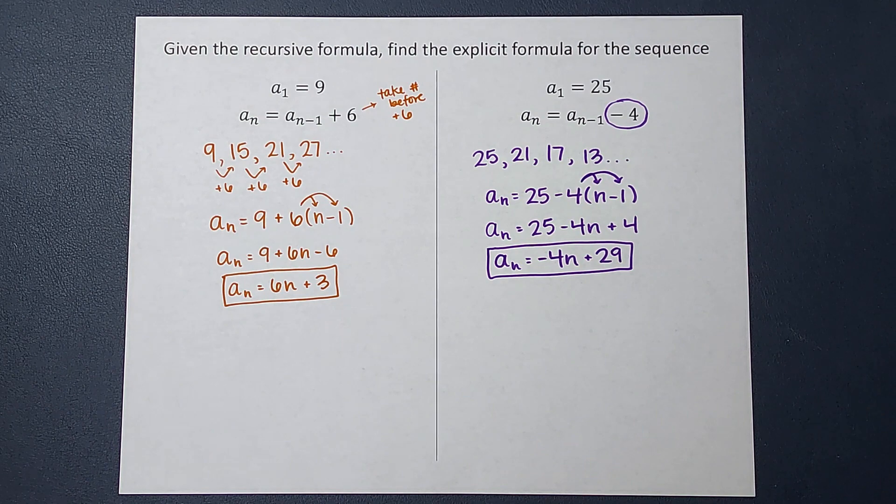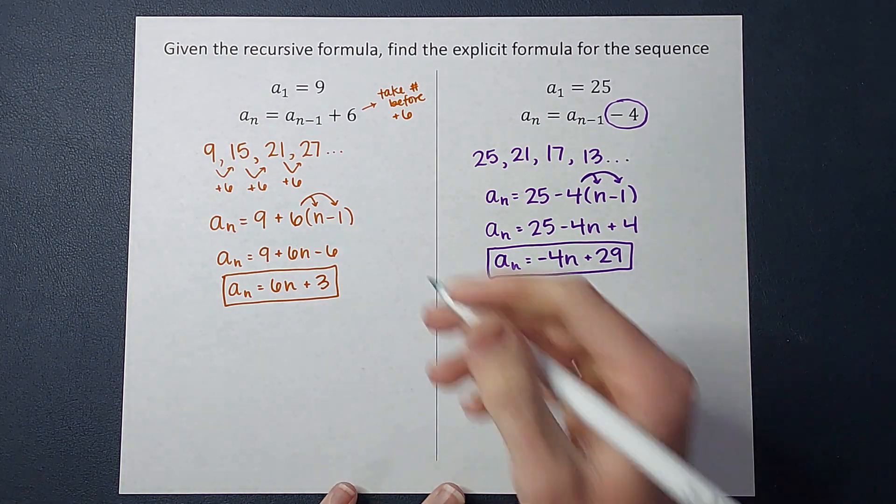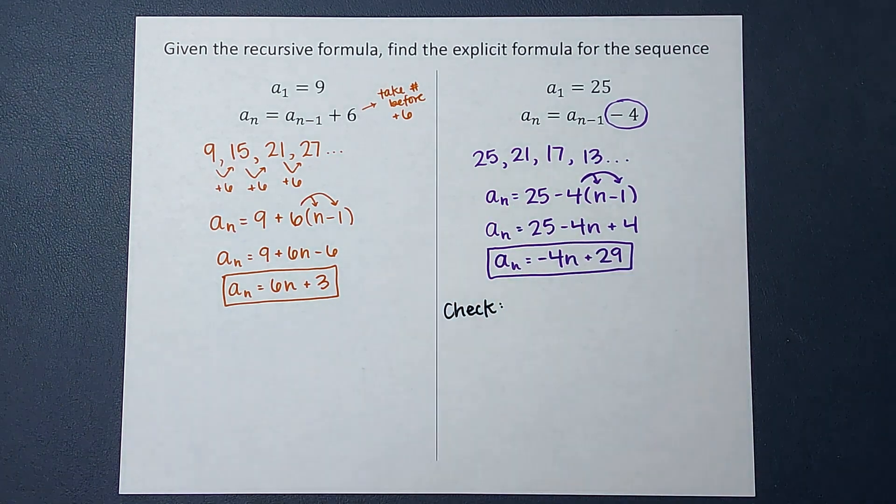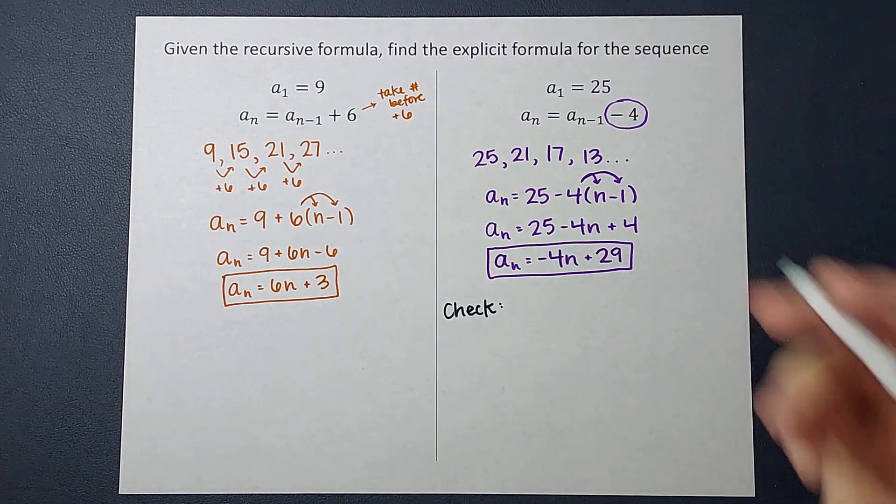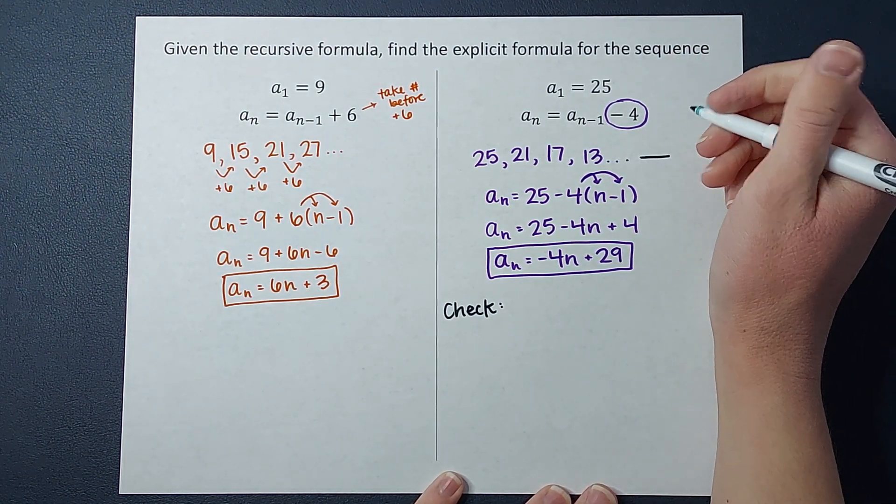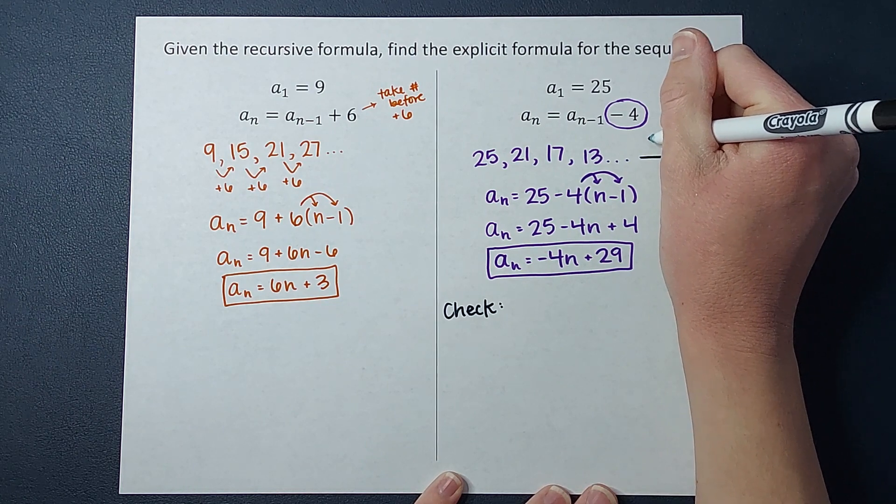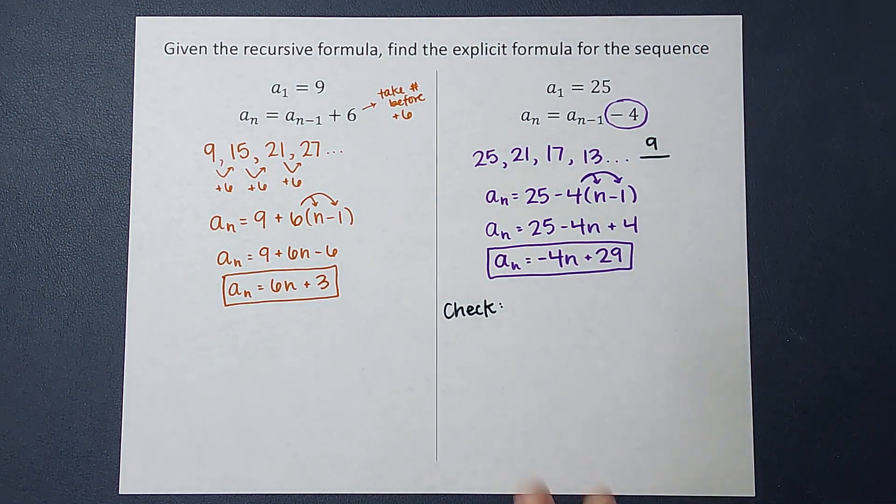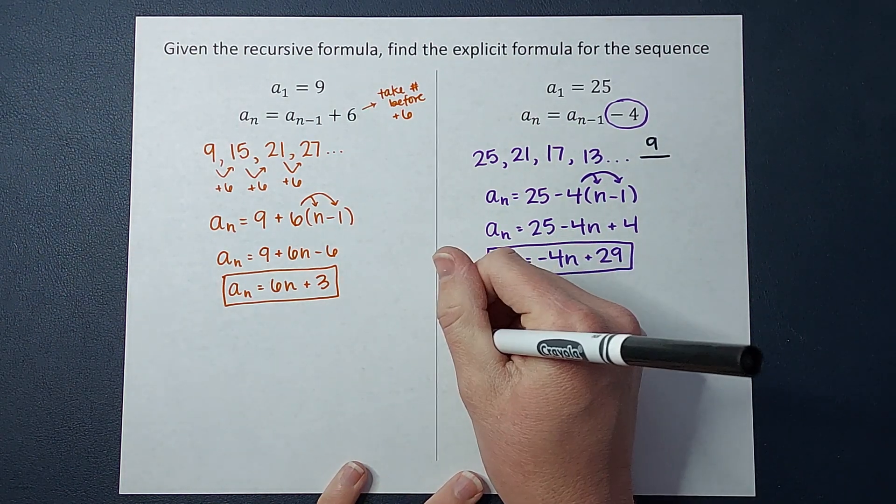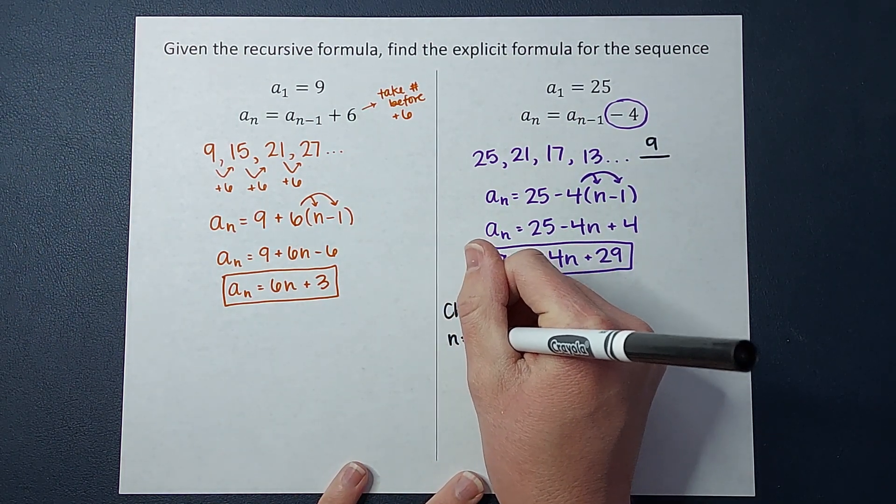And then I'm going to go ahead and check on this one to show you what that looks like. So if we want to check ourselves, make sure we did this right. One way we can do that is let's figure out what would our fifth term be. If I subtract 4 again I am going to get 9. So let's make sure when I plug into this equation that's what I get. So I am looking for the fifth spot, n equals 5.